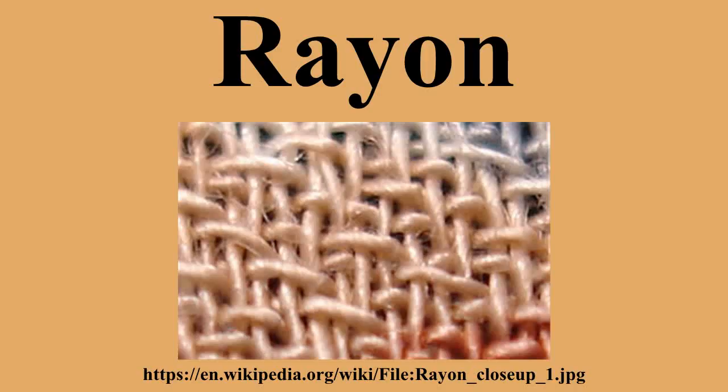Paul Schutzenberger discovered that cellulose reacts with acetic anhydride to form cellulose acetate. The triacetate is soluble only in chloroform, making the method expensive. The discovery that hydrolyzed cellulose acetate is soluble in more polar solvents, like acetone, made production of cellulose acetate fibers cheap and efficient.